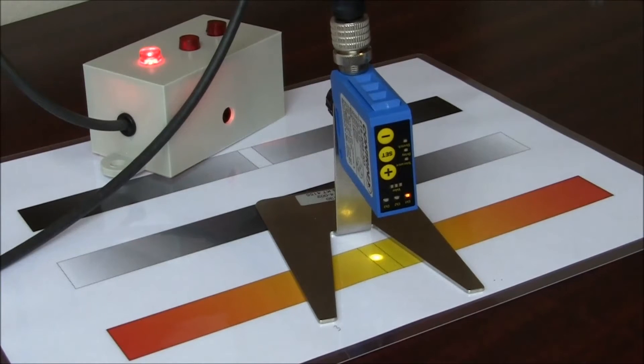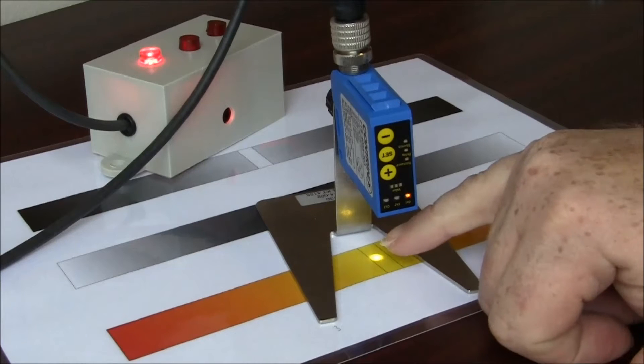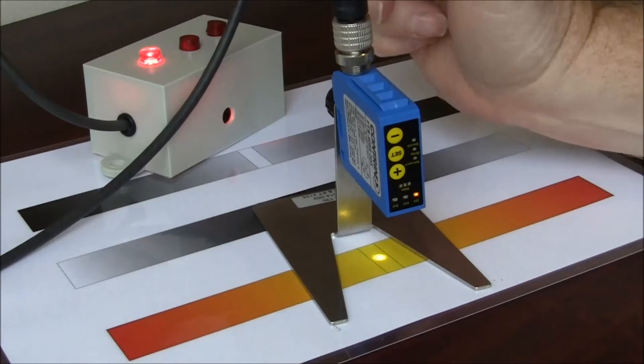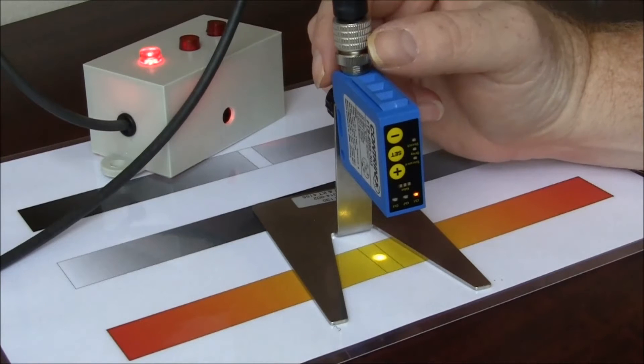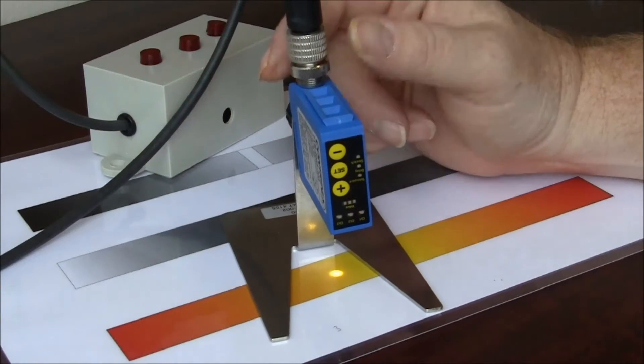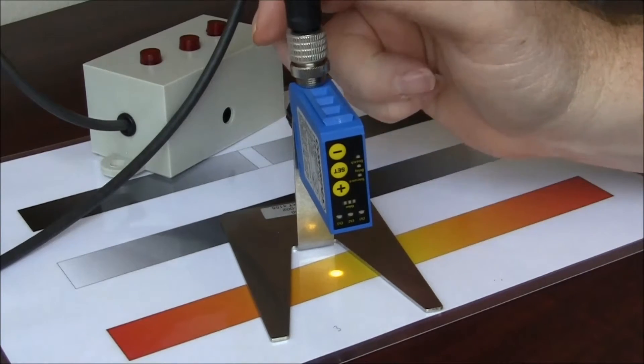I currently have this sensor set for channel 1, detecting the yellow, and I have it set for the lowest tolerance, which means it's the most specific. So coming off, there it goes, it's off. I'm going to show you how to set that up.